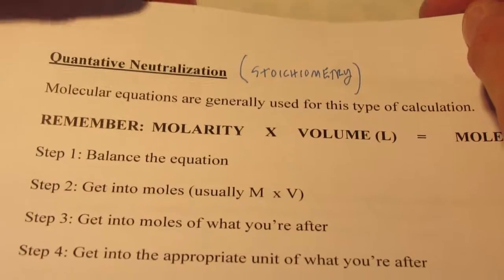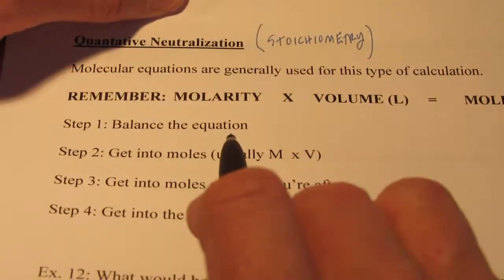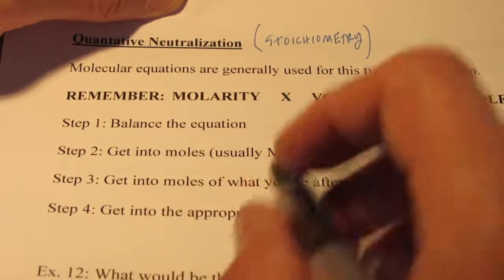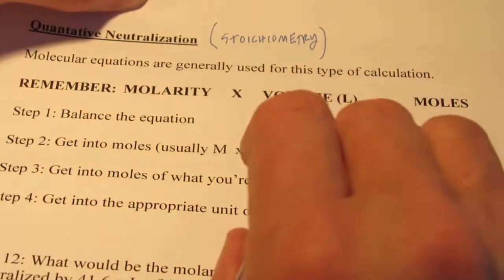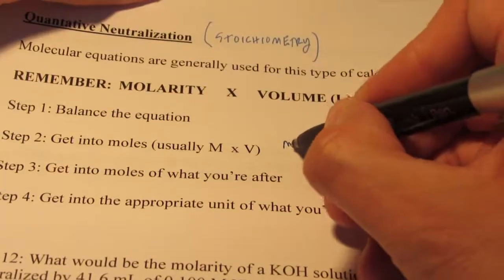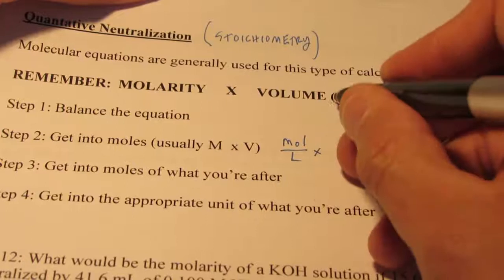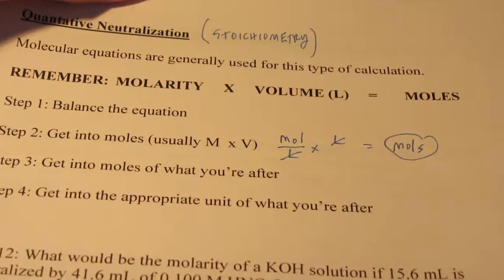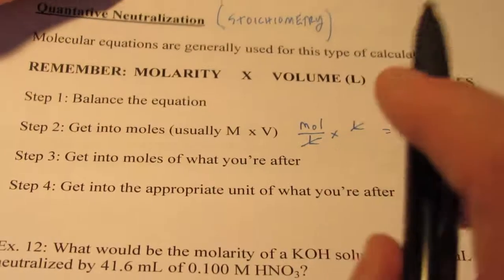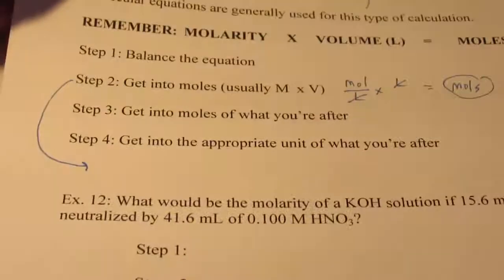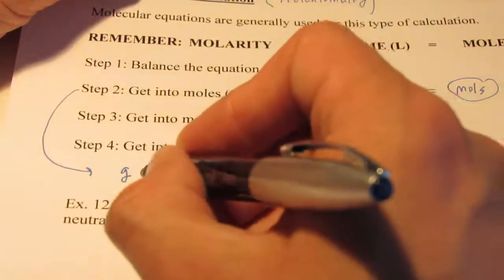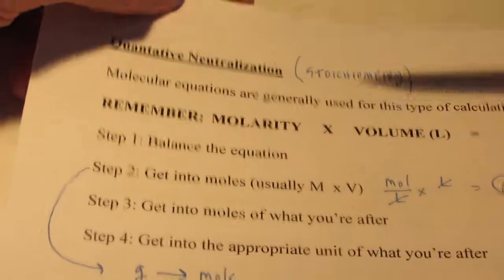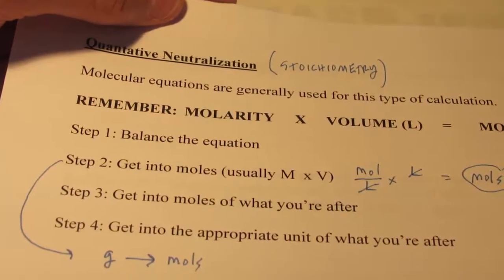In stoichiometry, there are four steps. Number one, you balance the equation — sometimes you have to write it first. Then we have to get into moles. For this particular chapter, it's usually going to be molarity times volume. Molarity has units of moles per liter, and if I multiply by the volume in liters, liters cancel out and that leaves us with moles. Another way to get into moles is going from grams and dividing by the molecular weight. But for the most part, we'll be using molarity times volume.